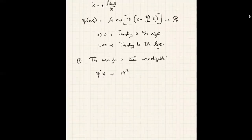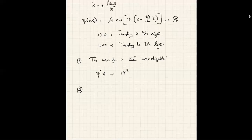Since energy is a continuous variable, the sum over n should be replaced by an integration. This part — the integration — is what will end up saving the normalization later. For now, notice that the formal solution of the time-dependent Schrödinger equation we wrote is not a normalizable wave function.